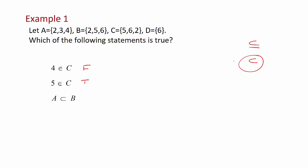So is A a subset of B? We've got B is 2, 5 and 6. Set A is 2, 3 and 4. So that's false. D is a subset of C? Well D just has one member, 6. That's true.